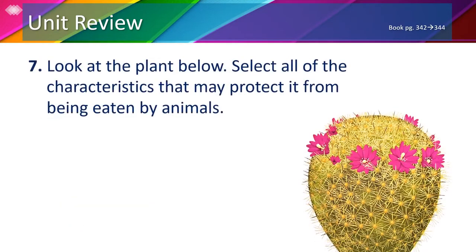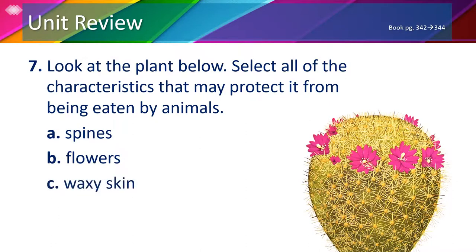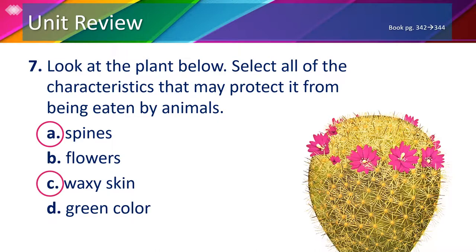Look at the plant in number 7. We need to choose all the characteristics that may protect it from being eaten by animals. We have A. Spines; B. Flowers; C. Waxy skin; D. Green color. The flowers and its green color will attract animals to it. However, the spines and the waxy skin will prevent animals from eating it.